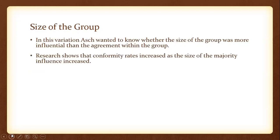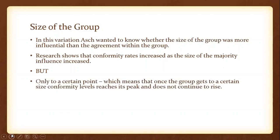What the research shows is that conformity rates increased as the size of the majority influence increased. But there is a big but here — he found that majority influence only increased to a certain point. Once the group gets to a certain size, conformity levels reach their peak and do not continue to rise. So the size of the group, once it gets to a certain number, doesn't become more influential.